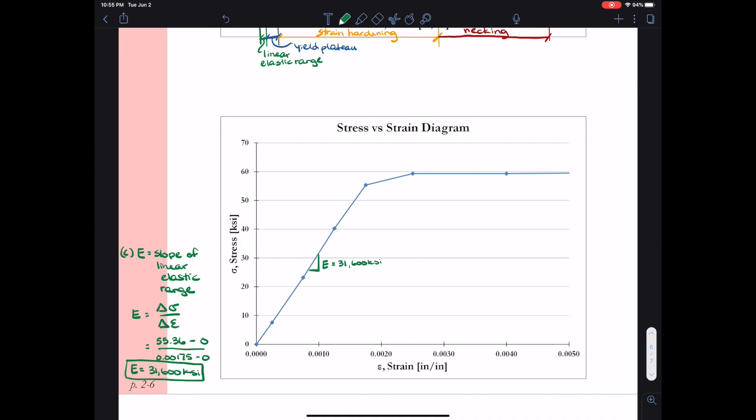Alright, for part D, we have to identify the yield stress. And I want to walk you through the process of identifying the yield stress using the 0.2% offset method. So in the 0.2% offset method, we identify the point of strain at 0.002. So remember, 0.2% as a decimal is 0.002. And so I come into that value for strain and I plot a line that's parallel to the slope, parallel to that linear elastic region. So I plot a line at the same slope as the linear elastic region or at a slope of 31,600 KSI.